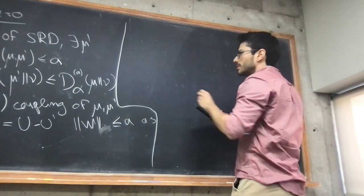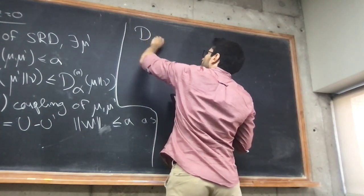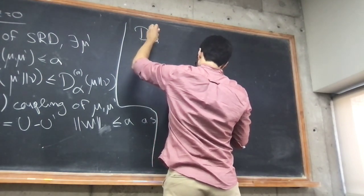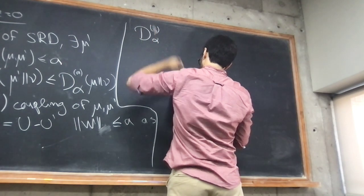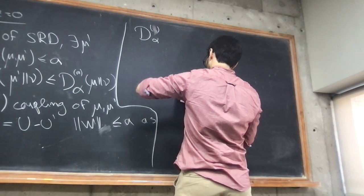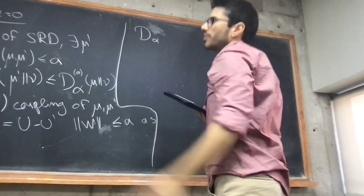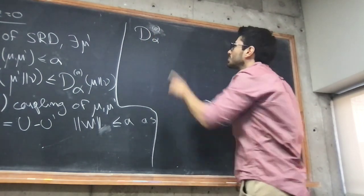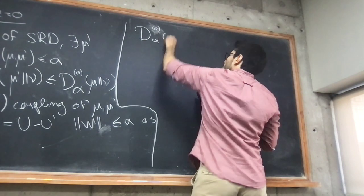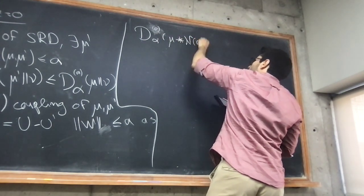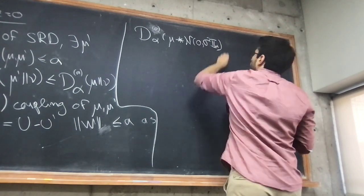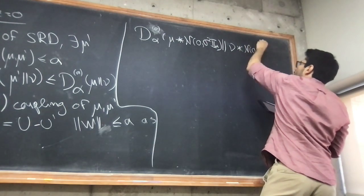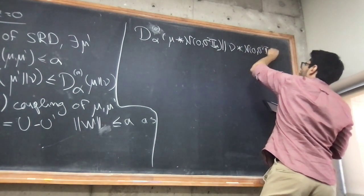Now I want to upper bound the shifted range divergence. Since z equals zero, this is just the range divergence on the left. I want to get a bound on the range divergence between mu convolved with a Gaussian against nu convolved with a Gaussian.